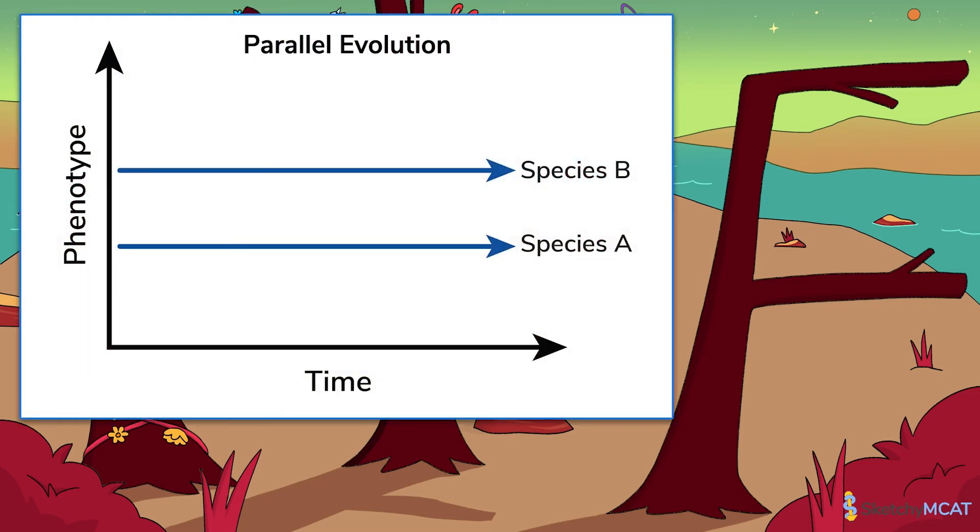On Earth, some mammals in Australia underwent parallel evolution after Australia's landmass broke away from current-day South America millions of years ago. In Australia today, you'll see animals that look a lot like mice, wolves, and cats, but are marsupials instead of placental mammals.